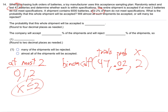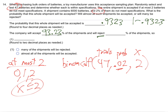That comes out to 0.9323. Move the decimal twice for percentage — the company will accept 93.23 percent of the shipments. For the reject percentage, one minus 0.9323 gives 0.0677, so 6.77 percent will be rejected — or you could just subtract from 100. They're accepting almost all of the shipments on this one.